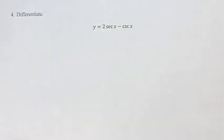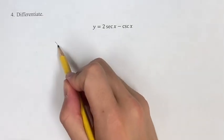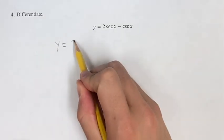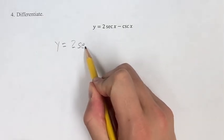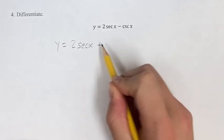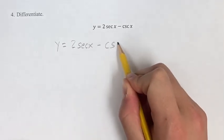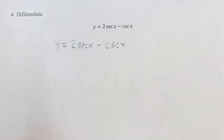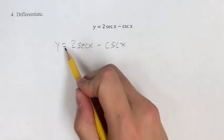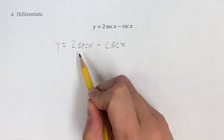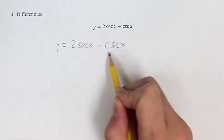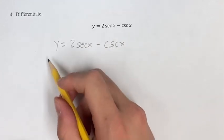In this problem, we're differentiating the function y is equal to 2 secant x minus cosecant x. So what we're going to do is we're going to take the derivative of this term, and we're going to subtract the derivative of this term.